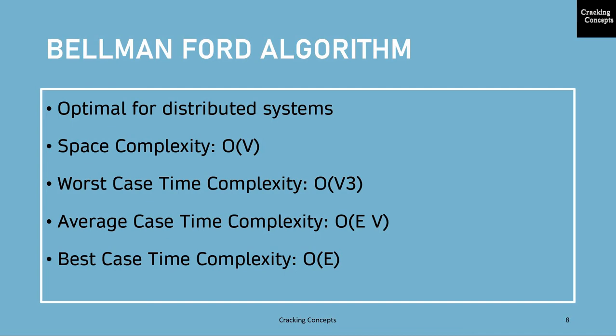Now this algorithm is optimal for distributed systems. Looking into its space complexity, it is big O of V. Its worst case time complexity is big O of V cubed. Average case time complexity is big O of E times V, and best case time complexity is big O of E.